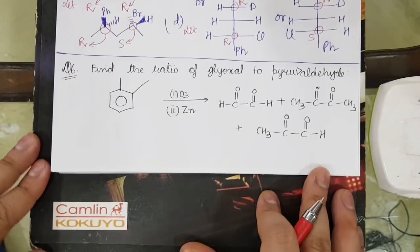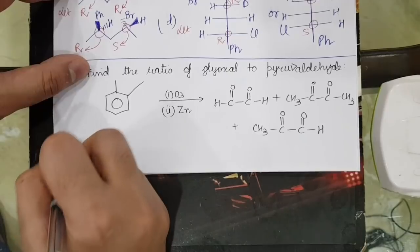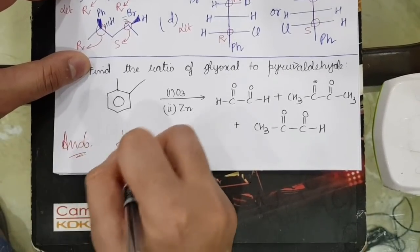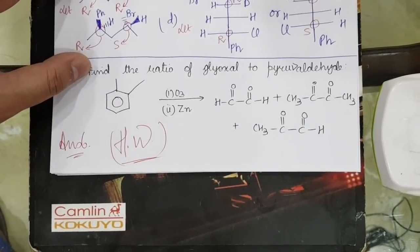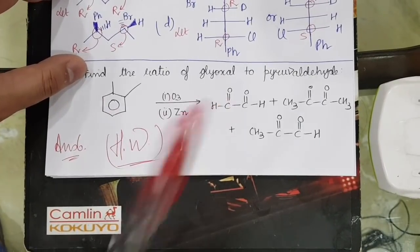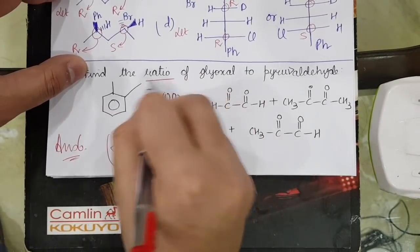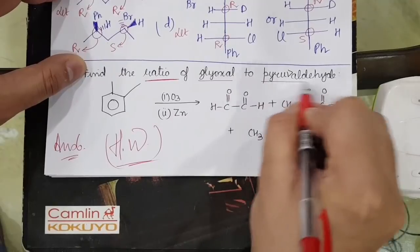So the correct answer will be equal to 1, 2, 3, and 4. Good question, so make sure you do that. So 4 will be the correct answer for this question. Please don't forget to like the video, that is the major confidence booster. Question number 6, that is homework for all of you. You guys have been given this ortho-xylene ozonolysis. You have been asked to find out the ratio of glyoxal to pyruvaldehyde.